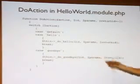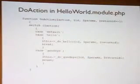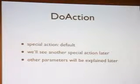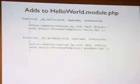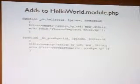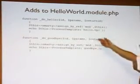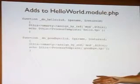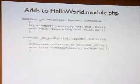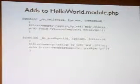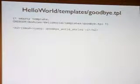There's this magic 'default' and the other parameters we'll get to later. Here we implement those two functions that get called by our do_action, and they're actually identical with the exception of which template they call. This is not the most efficient programming, but it's just as an example. We've created our goodbye template and it is very much like our hello template, with the exception that we're calling a different key from the lang.